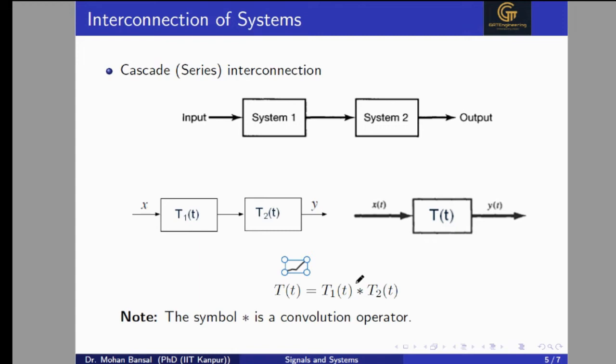So in the time domain, we convolve the systems when they are in series. But in the frequency domain — for example, in the Laplace transform S domain — we multiply the transfer functions. Like G1(S) and G2(S), we multiply them if they are in series. But in the time domain, we convolve them. The star operator here denotes convolution.